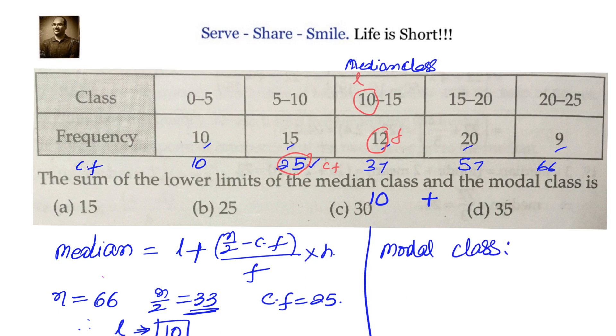Where we have the values of frequencies are 10, 15, 12, 20, and 9, and we see that 20 is the greatest value. Opposite to 20, whatever the class interval we have, that is our modal class.